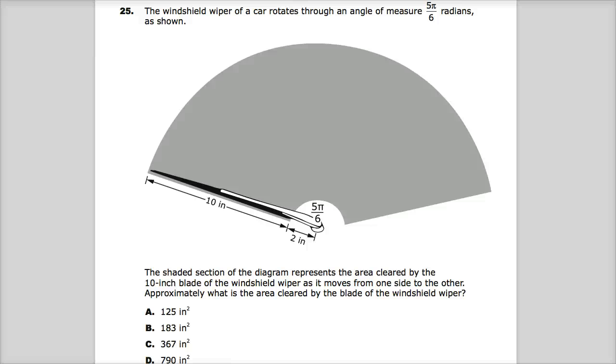Welcome. This is the Integrated Math 3 practice test. Question number 25 is in subpart 3, so you can use a calculator. The question says the windshield wiper of a car rotates through an angle of measure 5π/6 radians as shown. The shaded section of the diagram represents the area cleared by the 10-inch blade of the windshield wiper as it moves from one side to the other. Approximately, what is the area cleared by the blade of the windshield wiper?